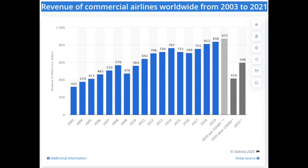This is a pretty interesting graph — it's from Statistica, which doesn't show the source unless you pay an extra fee. These are their estimates on worldwide revenues. I combined those numbers with another estimate from Wikipedia for the total in billions. It's almost a trillion dollars per year in airline flights, and you can see the graph over the years.